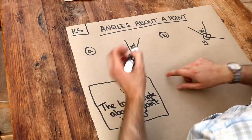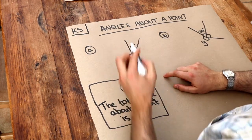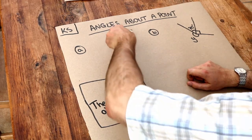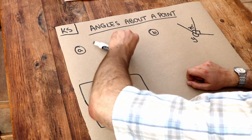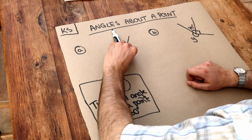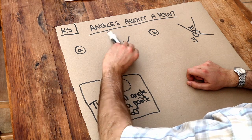So that means, for example, that if you're considering the total amount of turn about this point here, if my pen was to spin one full way around, that is 360 degrees that you have turned.